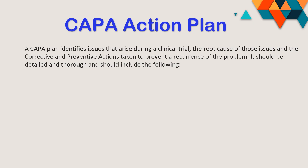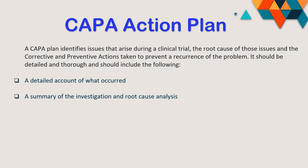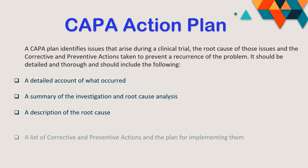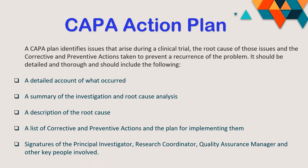The CAPA action plan identifies issues that arise from the clinical trial and their root causes. CAPA procedures are applied to ensure issues do not recur as quality problems. The plan should be detailed enough to include: a detailed account of what happened, a summary of the investigation and how the root cause was reached, a clear description of the root cause, and a list of corrective and preventive actions being taken and how they will be implemented. Signatures of all parties involved — such as the principal investigator, research coordinator, and quality assurance manager — must also be included.